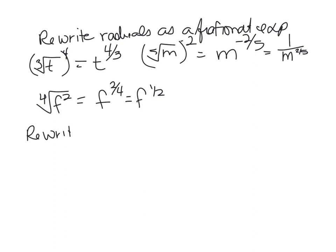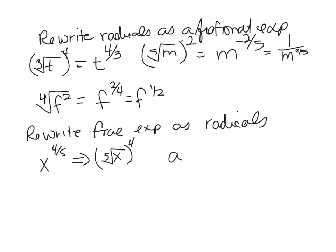And then we can go the other way around and write fractional exponents as radicals. So we have, say, X to the 4/5 power. So that is the fifth root - the denominator becomes the root - of X all raised to the numerator fourth power.